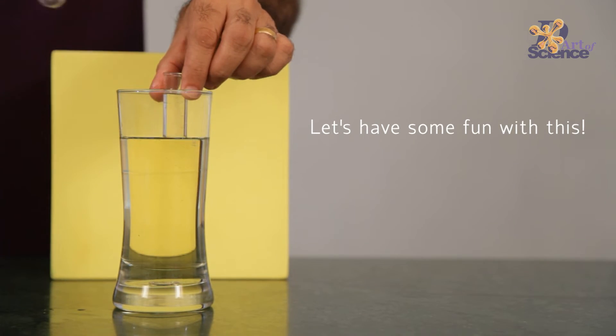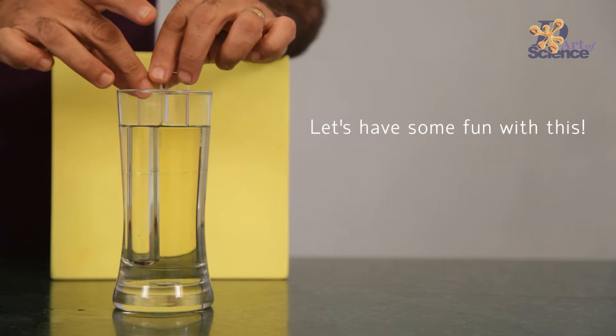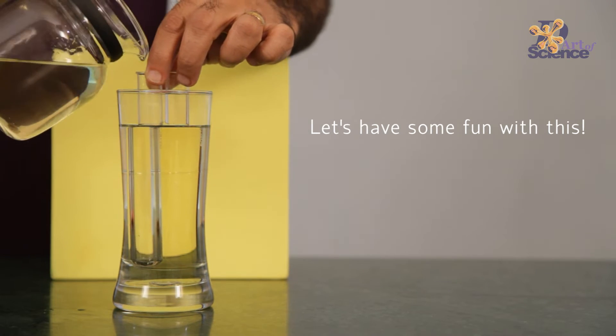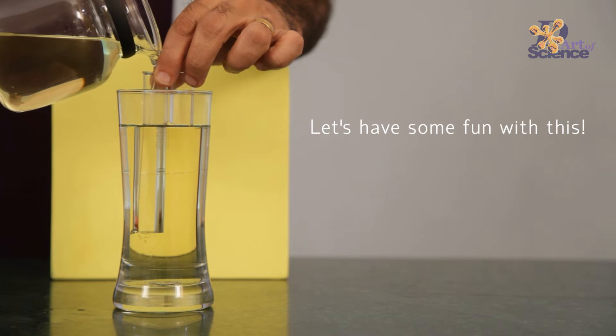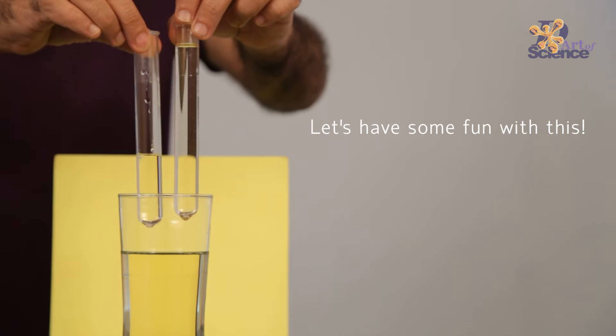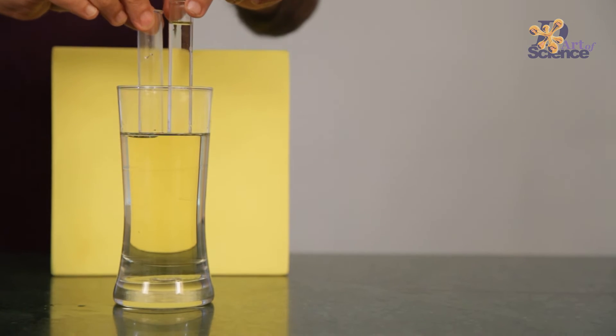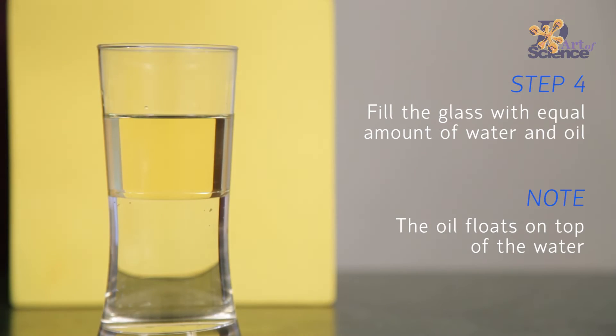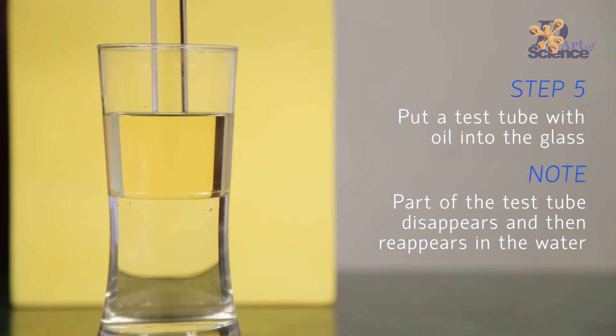When we put an empty test tube inside, the beam of light bends multiple times, once while entering the glass, then while entering the test tube, then while exiting the test tube and finally exiting the glass, allowing us to see the test tube as well as the glass.